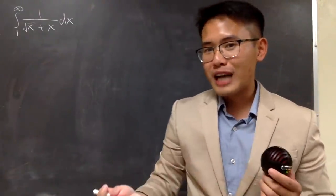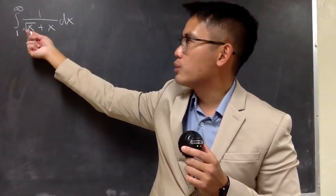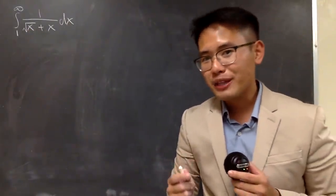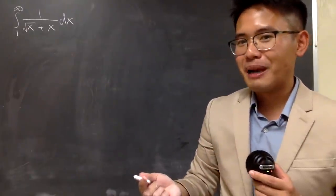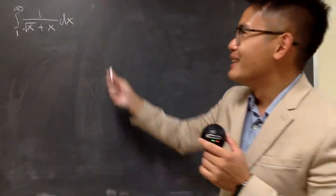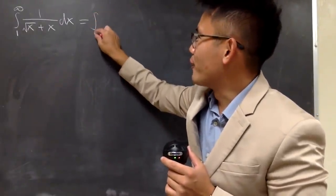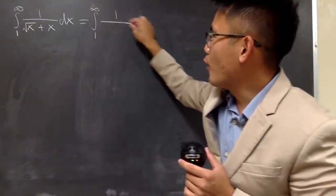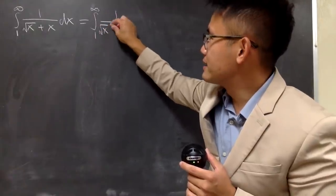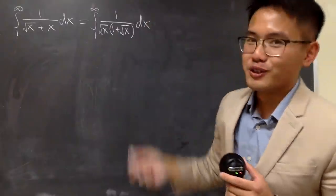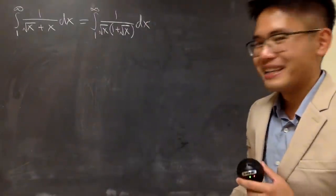You can just do u sub, like u equal to square root of x. Sure, that will work, but I'm going to leave that to you guys. Because on my actual test, I actually help the students by factoring out the square root of x. So, the question I keep up is actually the integral from 1 to infinity of 1 over square root of x times 1 plus square root of x. This is actually the version I give out for my exam.